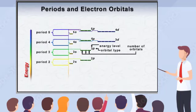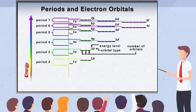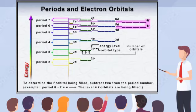Like the D orbitals mentioned in the previous scene, the F orbitals belong to a lower energy level than the period number. To determine the correct F orbitals being filled, subtract two from the period number.